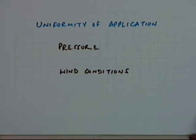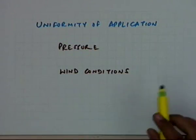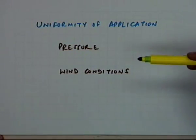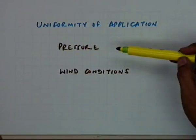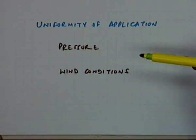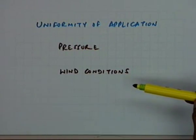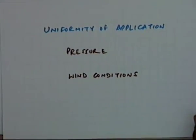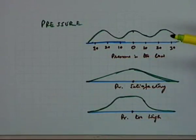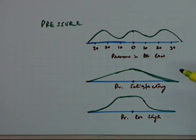In the last class we started looking at the uniformity of application. We mentioned that uniformity is dependent on two aspects: the prevailing pressures in the sprinkler irrigation network, and the wind conditions, which are the natural conditions. These two factors influence the uniformity to a large extent. We had started looking at how pressure changes or influences the uniformity.